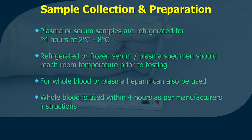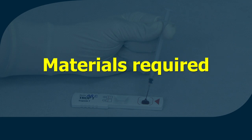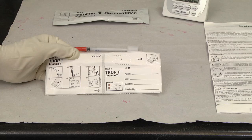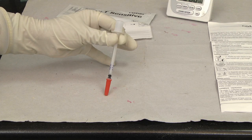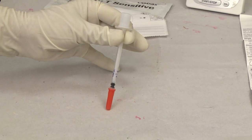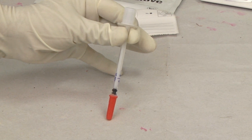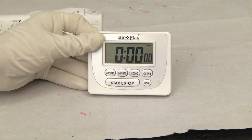Whole blood samples should be used within 4 hours or as per manufacturer's instructions after collection. Variation may exist between manufacturers and at times from lot to lot, so it is important to read manufacturer's instructions carefully before performing the test. Materials required: test device containing membrane strip in a sealed pouch with desiccant, labels and numbered cover strips. A disposable dropper to deliver the required amount of blood may or may not be provided with the kit; if not provided, use a pipette with disposable tips. Timer.